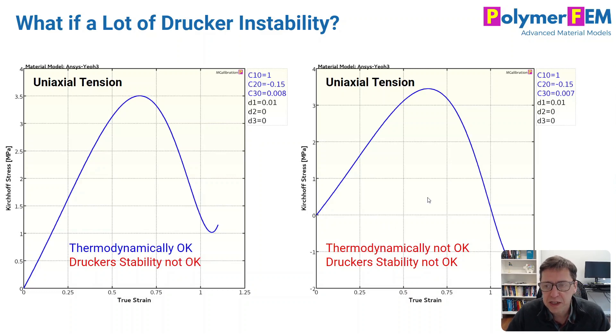And the figure to the right, I use a slightly different value of C30. The curve, it looks about the same, it drops a little bit more here. This is not Drucker stable, of course, but it's not thermodynamically okay because we have now a situation where we have negative stress when the strain is positive. And that's not really allowed for normal materials. If you pull on it, you have to apply force to pull on it. It doesn't just expand by itself like that.